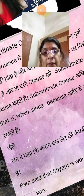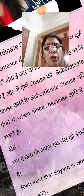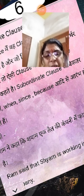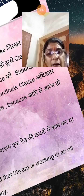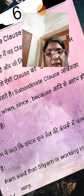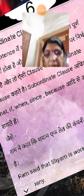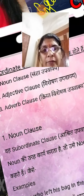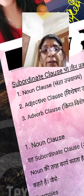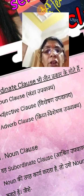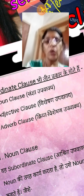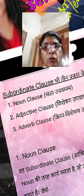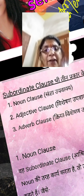It is starting with: that, if, when, since, because. For example, 'Ram said that Shiam is working in an oil company' — here 'that' is used, making it a subordinate clause. Subordinate clause bhi teen prakar ki hoti hai: noun clause, adjective clause, adverb clause.